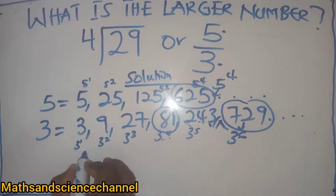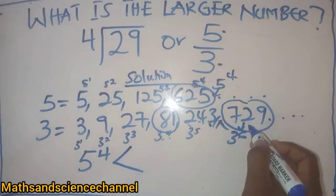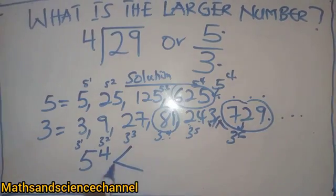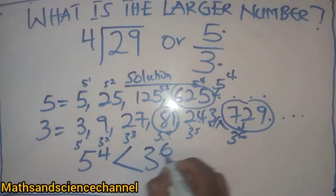So from here we have 5 raised to the power 4, and then 5 raised to the power 4 here is greater because it's less than 3 raised to the power 6 in this case.